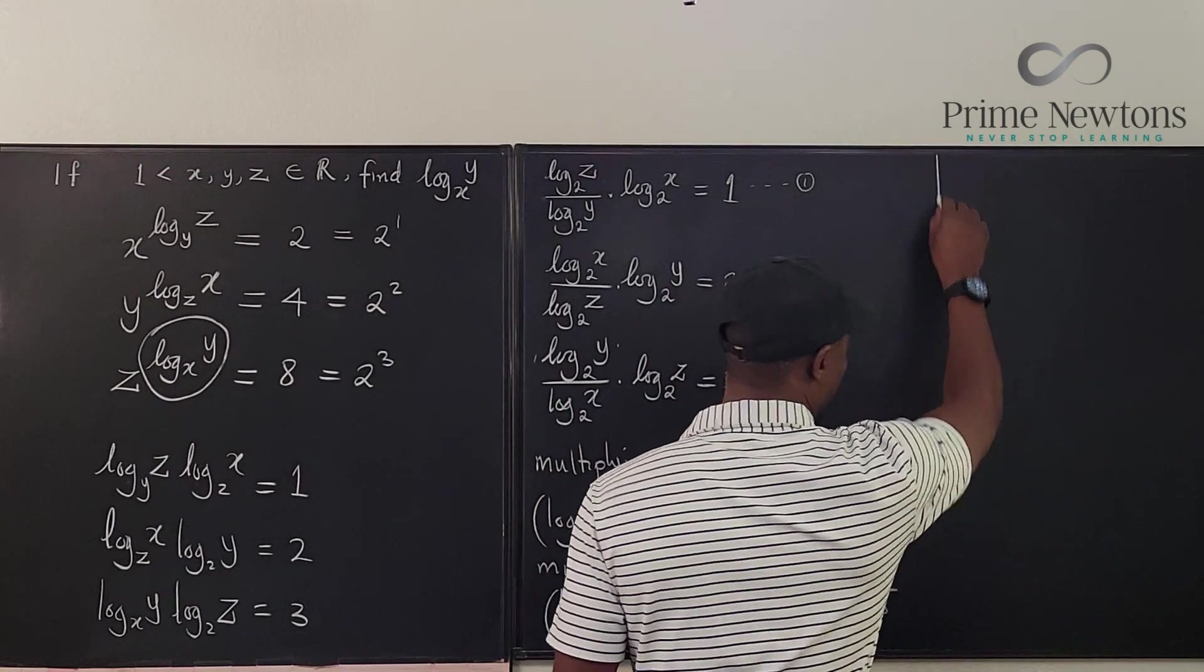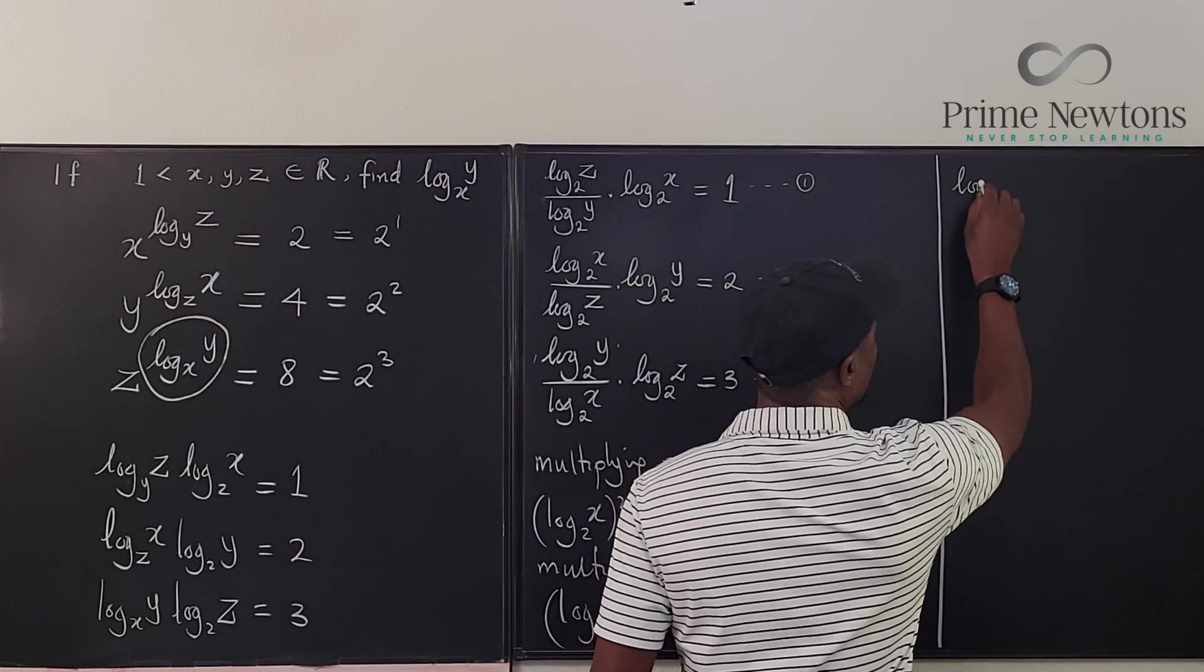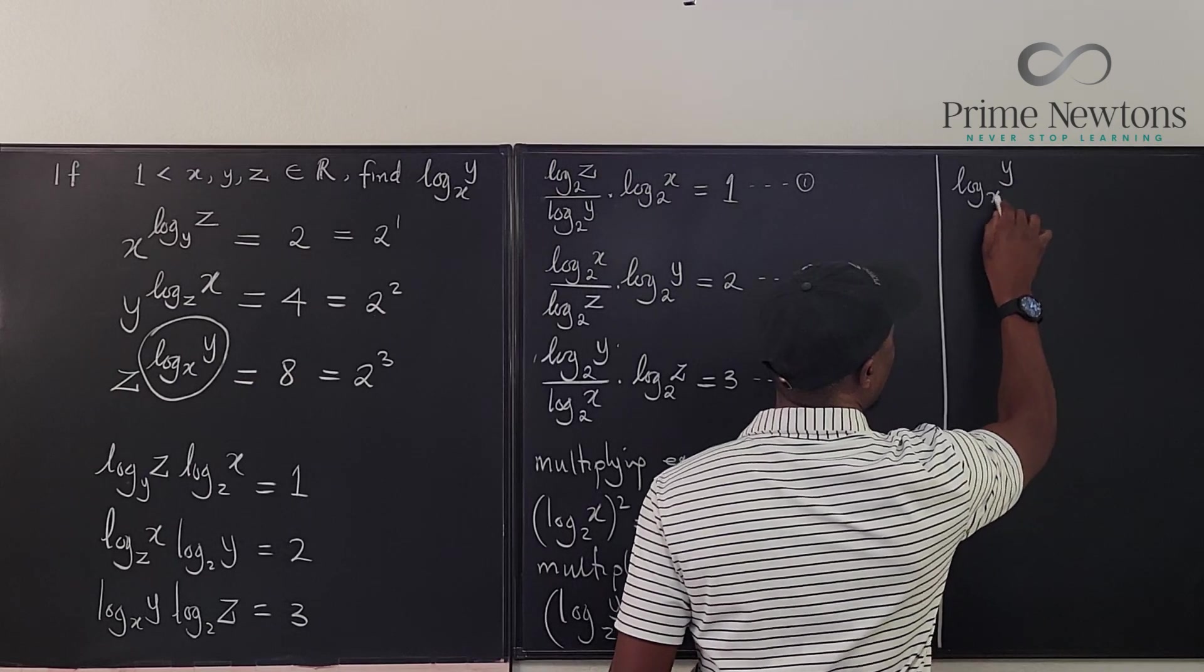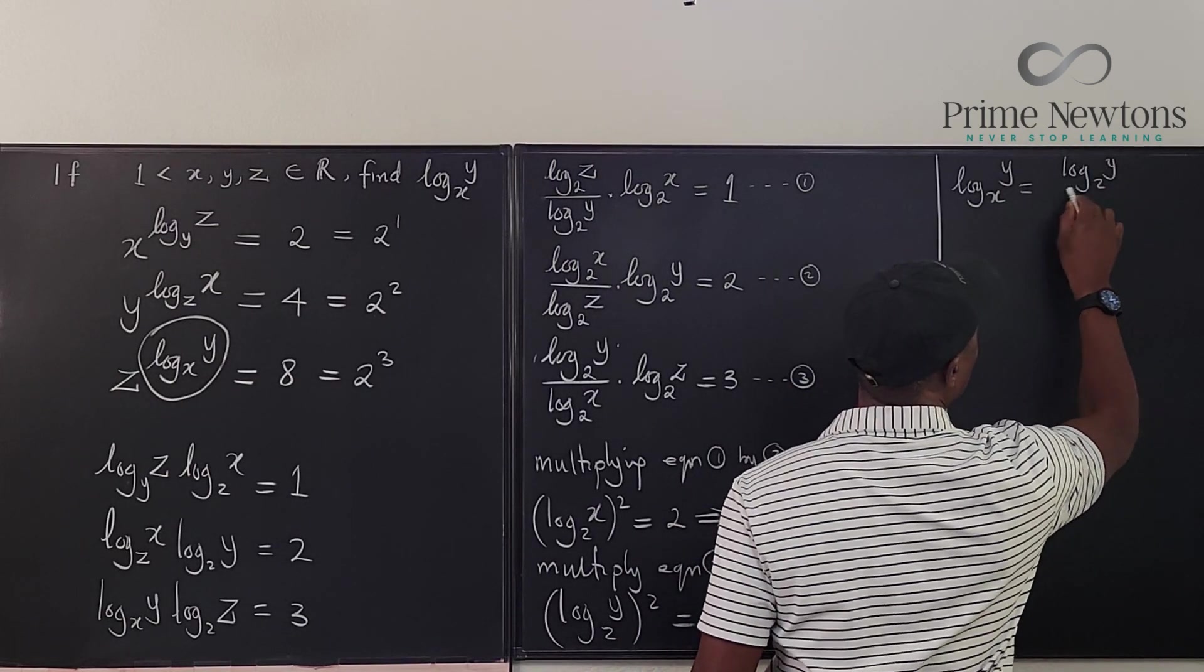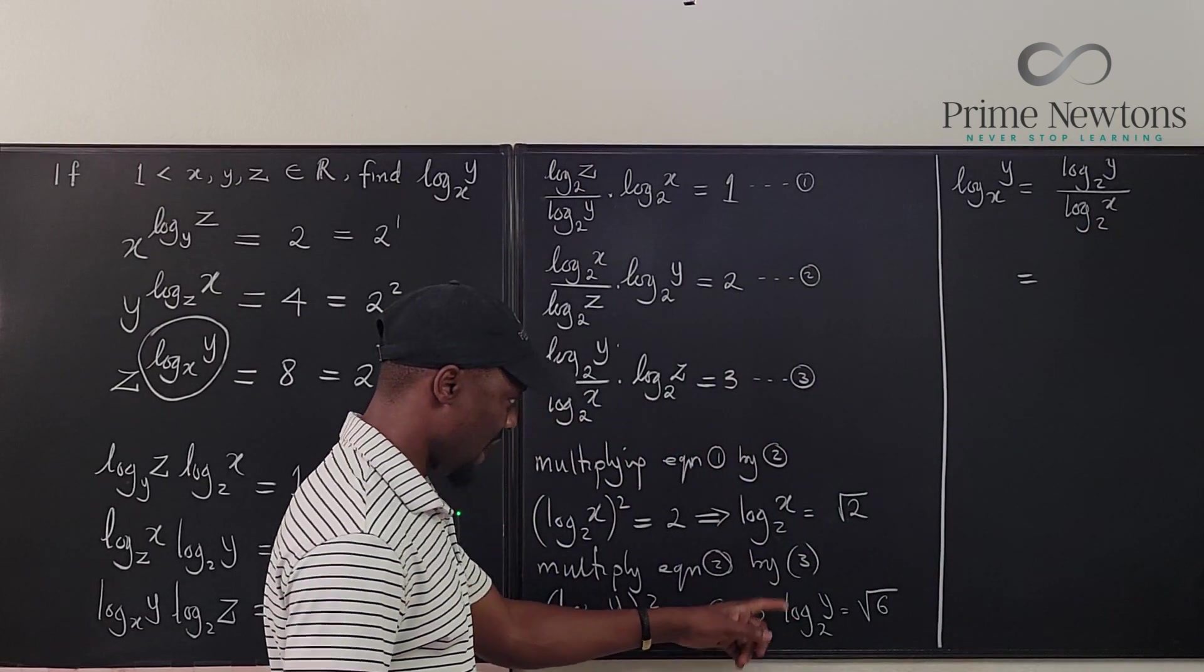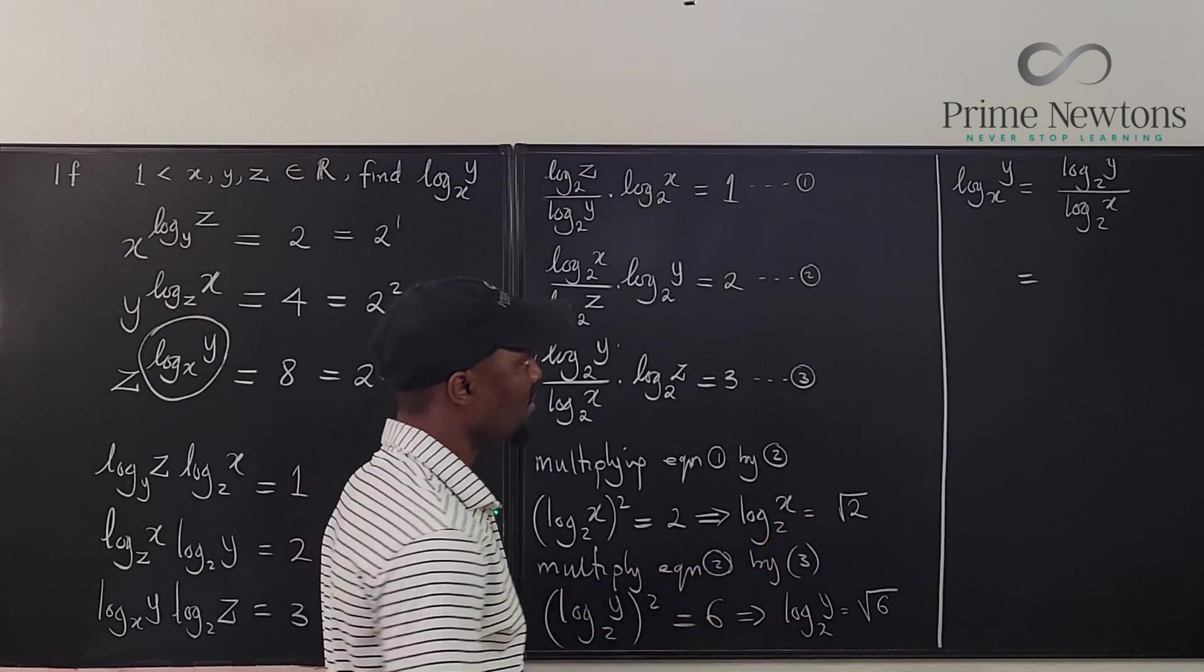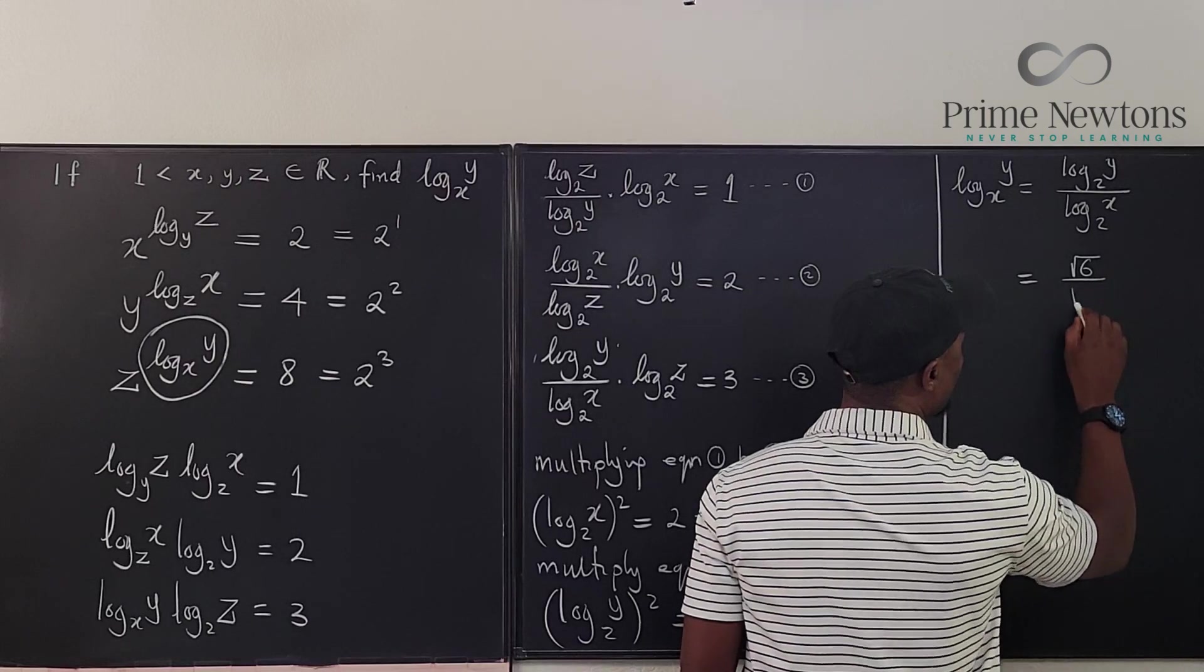Now we know that log y base x is equal to log y base two over log x base two, which are the two answers we already just obtained. So it's going to be this one divided by this one. So it's going to be equal to square root of six over square root of two.